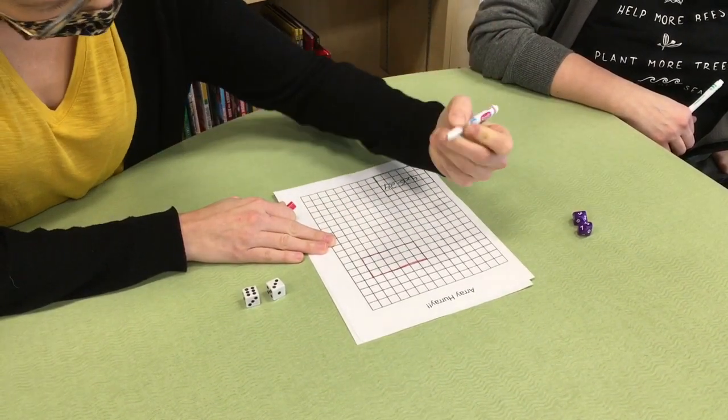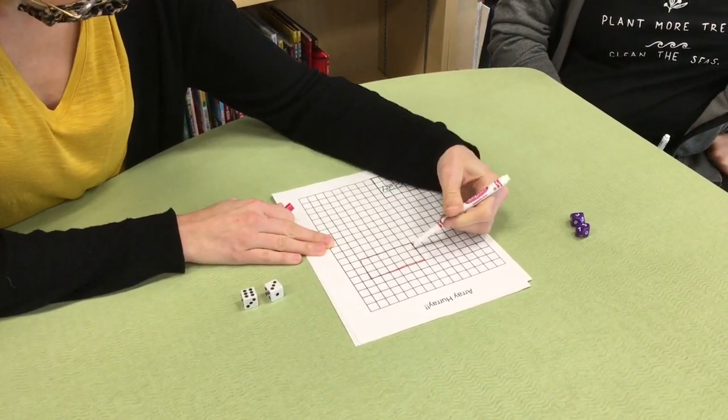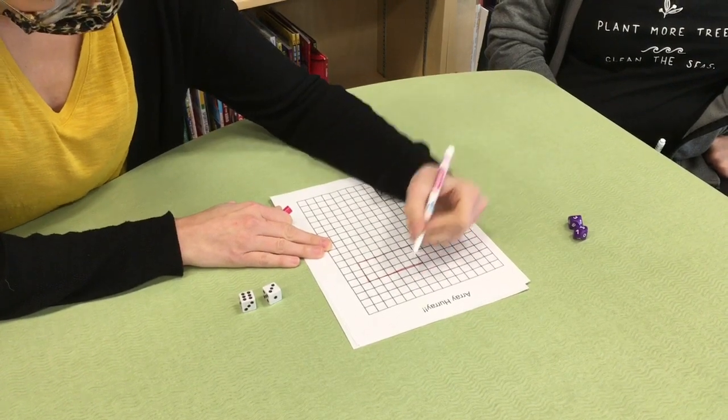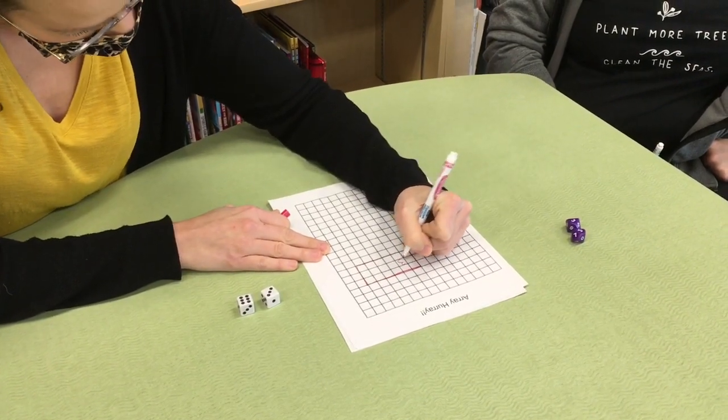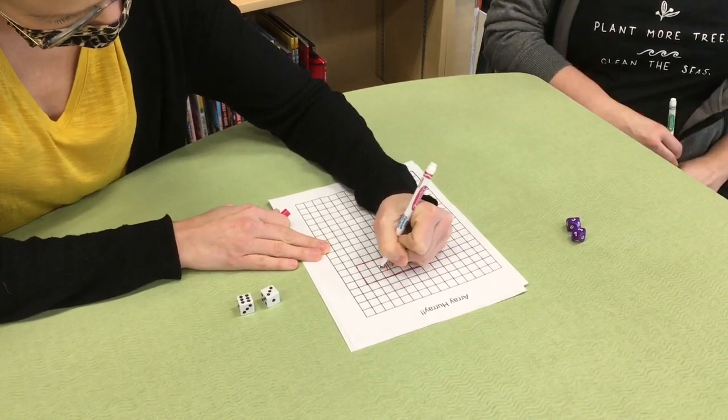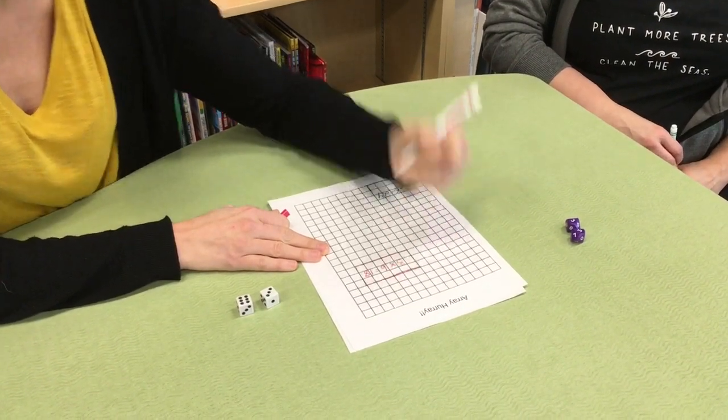And inside, I know three times six. So I know six, 12, 18 is the product. And I'm going to write three times six equals 18.